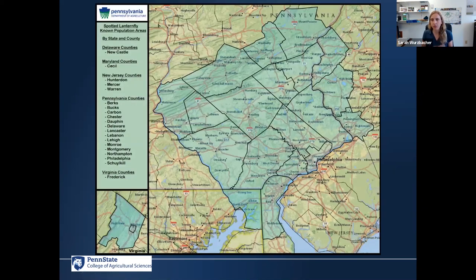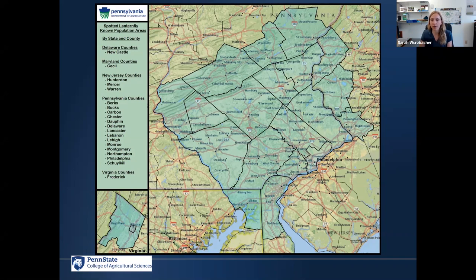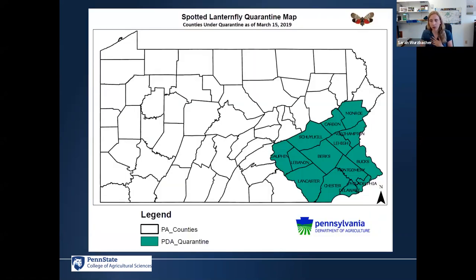Zooming in on Pennsylvania — I like this map a little better because it gives you a sense of what kinds of cities, transportation corridors, commerce, and population centers are within the current range of spotted lanternfly. Wherever people are moving, invasive species also tend to move. That's why it's an all-hands-on-deck situation — there are a lot of people moving in and out of this area and our attempts are really to try to educate the public and practitioners about not moving this thing around. Currently there is a quarantine in 14 counties in Pennsylvania.